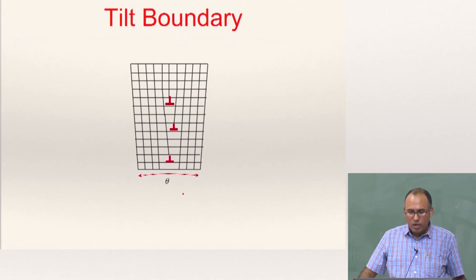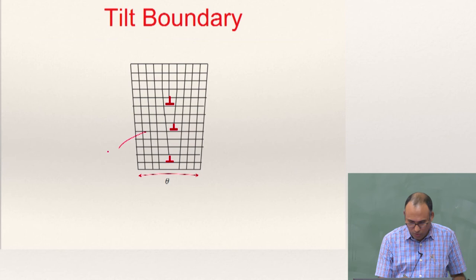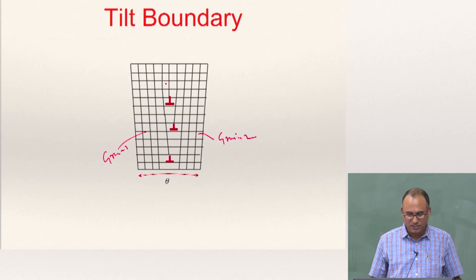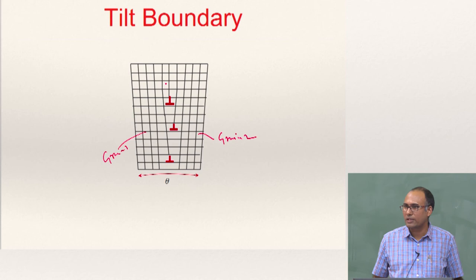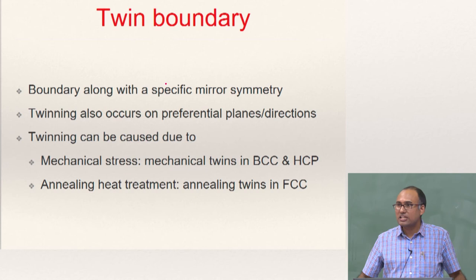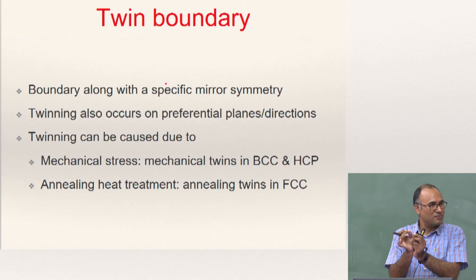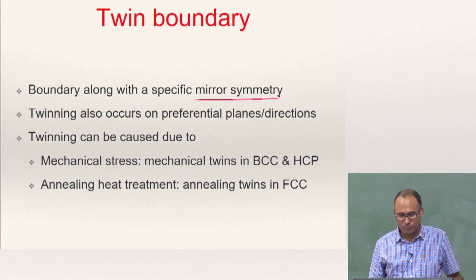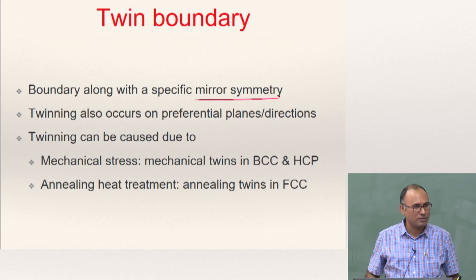There is also a tilt boundary. This is your grain 1 and this is your grain 2, and this is your misorientation — this can also be caused by dislocation structures. If you have dislocations of this kind, you will eventually have a tilt boundary. The twin boundary about which you are actually having the misorientation is also a defect. The twin boundary is a special boundary along which you will have a specific mirror symmetry, but the long range order is actually going to be disturbed along the twin boundary because the atoms are constrained to move in a specific fashion.